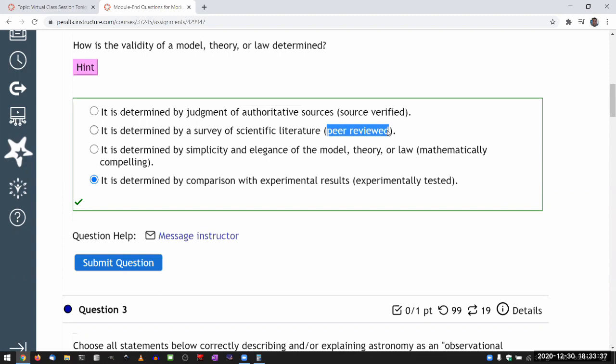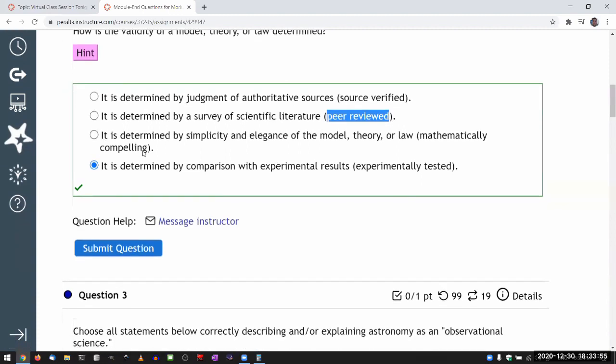But just because two people agree doesn't mean necessarily it's correct. And so while the publication in peer reviewed journal is an important part of a scientific community, it's not what determines what is correct or not.